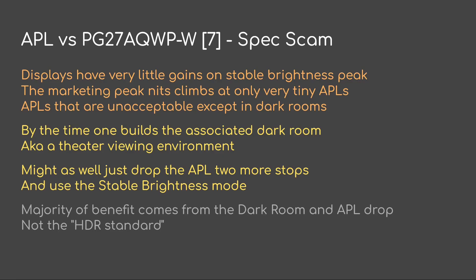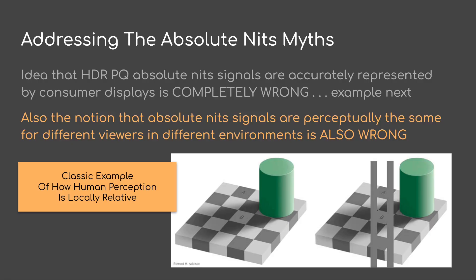By the time one builds the associated dark room — i.e. a theater viewing environment — you might as well just drop the APL two more stops and use the stable brightness mode. Note that the majority of benefit is really coming from the dark room and the APL drop, and not the HDR standard itself. Another thing to address is the absolute nits myth: the idea that HDR PQ absolute nits signals are accurately represented by consumer displays — this is completely wrong. Also, the notion that absolute nits signals are perceptually the same for different viewers in different environments on calibrated displays is also wrong.